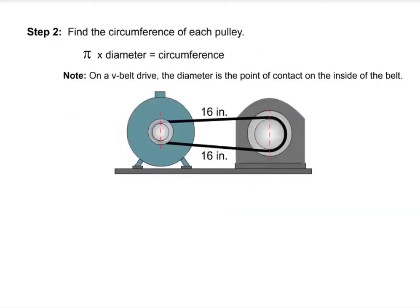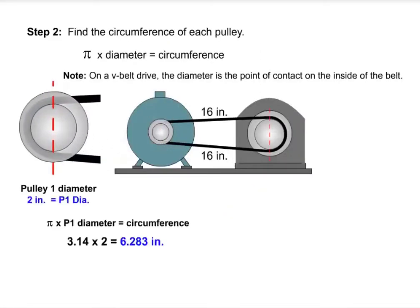Step 2. Find the circumference of each pulley by multiplying pi times the diameter.